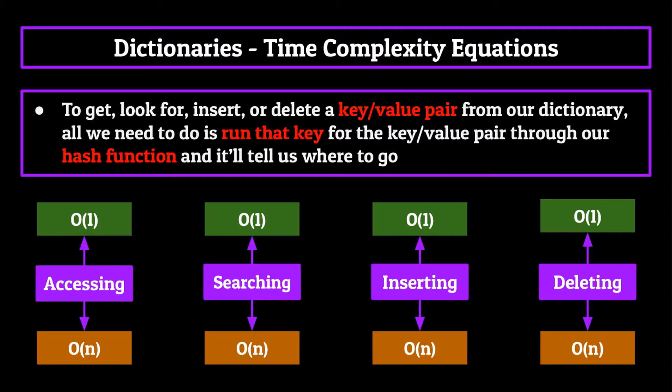To get, look for, insert, or delete a key value pair from our dictionary, all we need to do is run that key for the key value pair through our hash function. And it'll tell us where in the hash table to go in order to get, look for, insert, or delete one of our key value pairs. And that is the power of the hash table in the flesh.